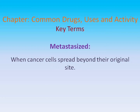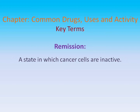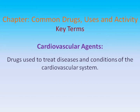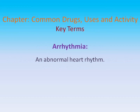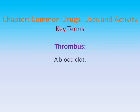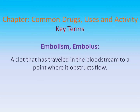Metastasized: When cancer cells spread beyond their original site. Remission: A state in which cancer cells are inactive. Cardiovascular agents: Drugs used to treat diseases and conditions of the cardiovascular system. Arrhythmia: An abnormal heart rhythm. Thrombus: A blood clot. Embolism or embolus: A clot that has traveled in the bloodstream to a point where it obstructs flow.